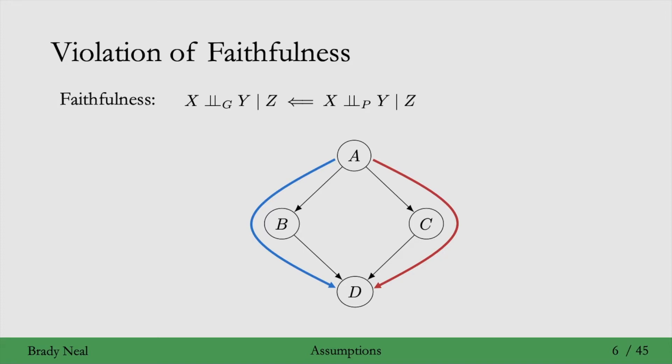These paths are like opposites, in a sense, and their associations cancel so that we get that a is independent of d in the distribution, even though a and d aren't d-separated in this graph.